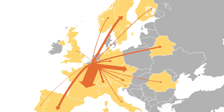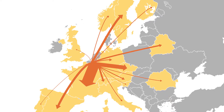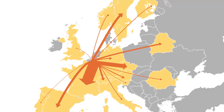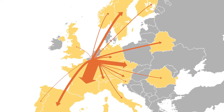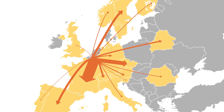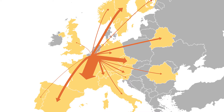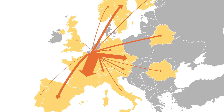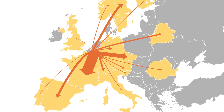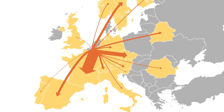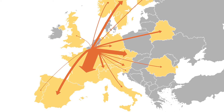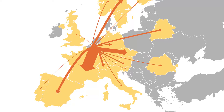The magnitude or amount of migration in a single flow line is represented by its thickness. This helps to show how migration is distributed geographically.